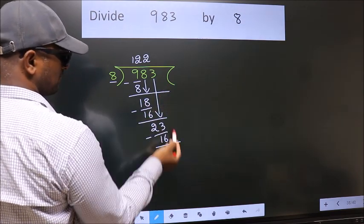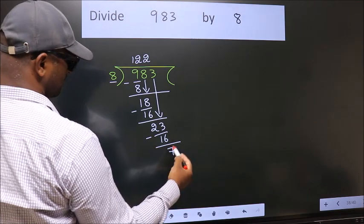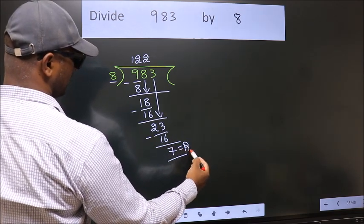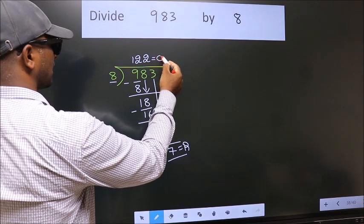No more numbers to bring it down. So we stop here. This is our remainder. This is our quotient.